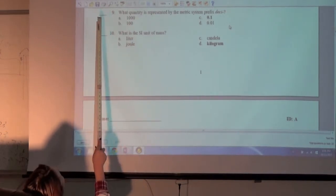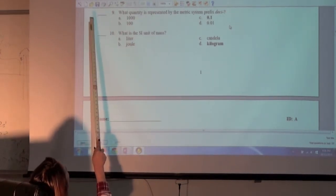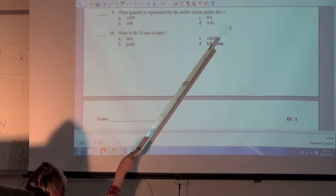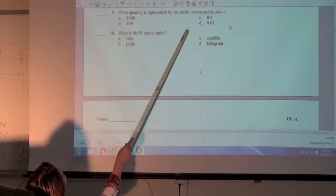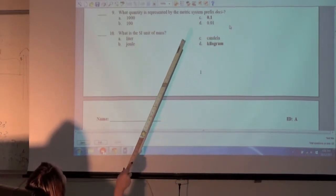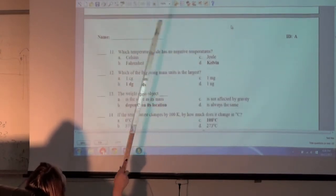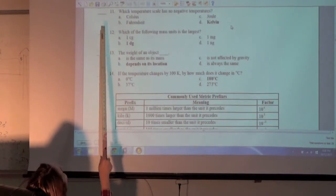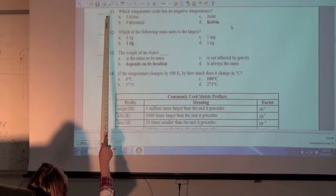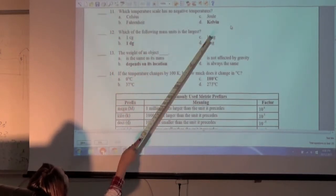What quantity is represented by the metric system prefix? C, 0.1. What is the SI unit of mass? D, kilogram. Which temperature scale has no negative temperatures? D, Kelvin.